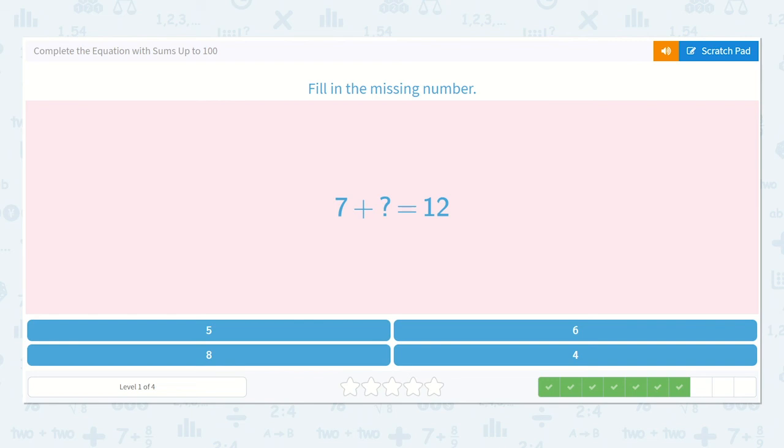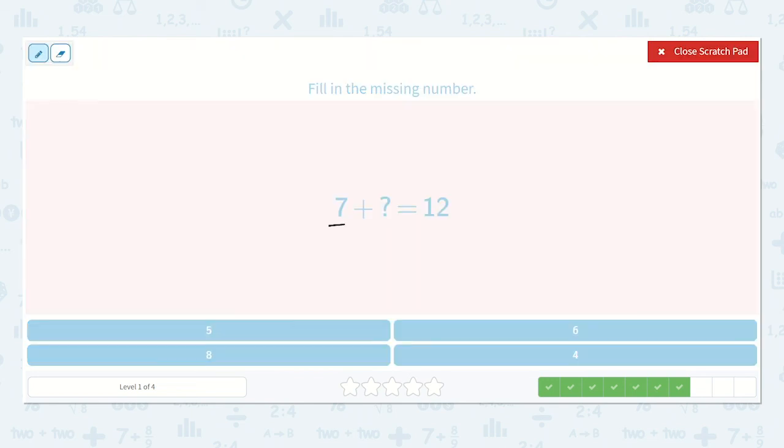Now we have 7 plus a number is equal to 12. So let's count on. 7, 8, 9, 10, 11, 12. That is 1, 2, 3, 4, 5. So 7 plus 5 is equal to 12.